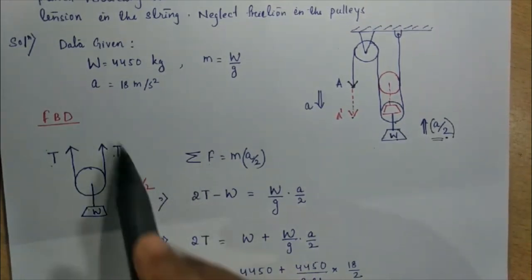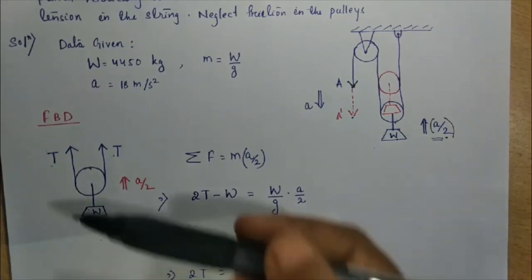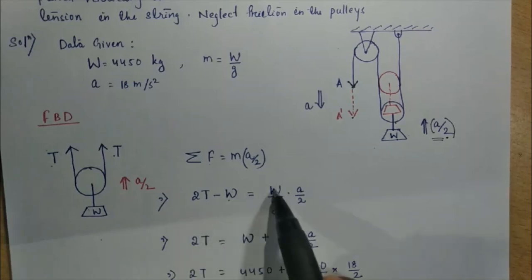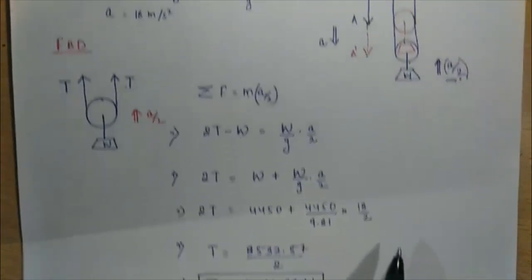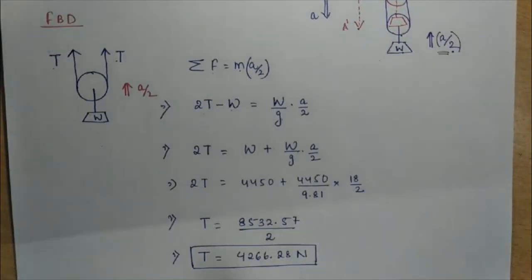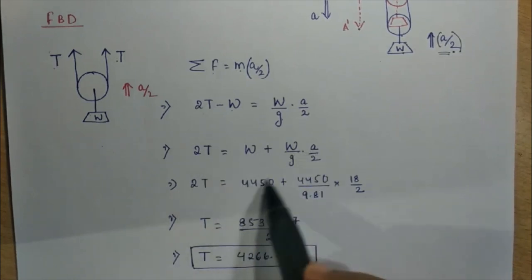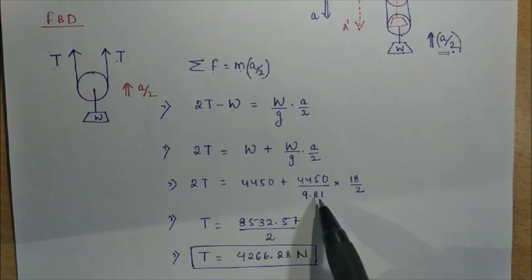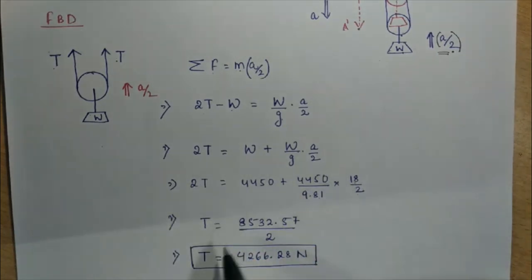Substituting W equals 4450, G equals 9.81, and A equals 18, so A/2 equals 9, we get T equals 4266.28 N. This is the tension in the string. Thank you.